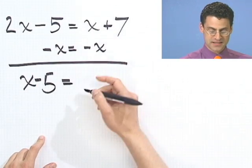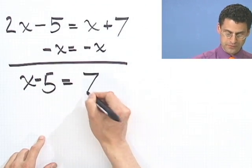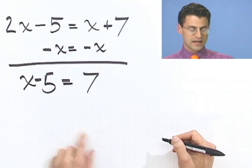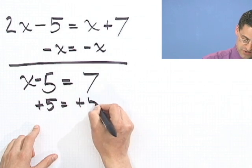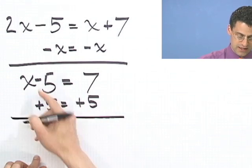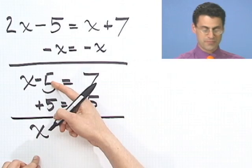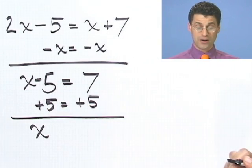And now x minus x, that drops out as 0. And I still have that 7 there. And now I want x all by itself, so I just add 5 to both sides, which doesn't change the value of anything. And this side, I just have x, and then minus 5 plus 5 is 0. They drop out.